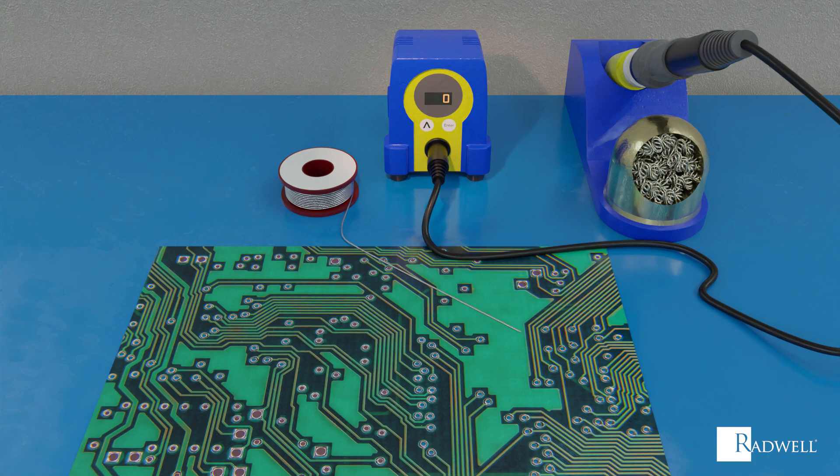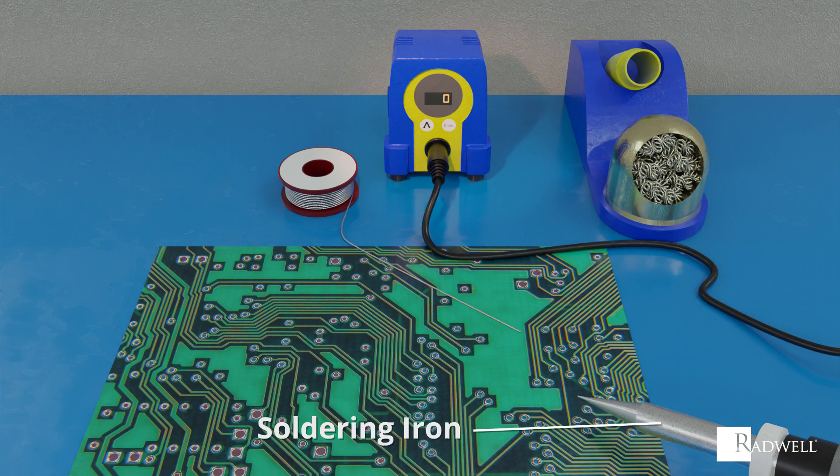Let's review the main components of a soldering setup. First is the soldering iron, which is used to heat the joint and melt the solder. Next is the brass sponge, which is used to remove oxidation from the soldering iron. Third is the solder, which joins the work pieces together.